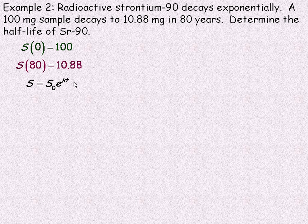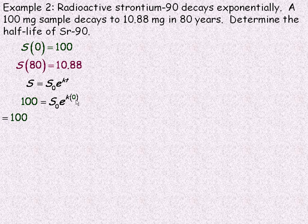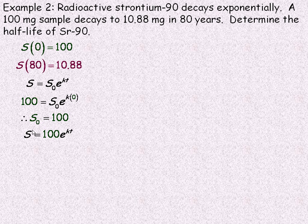We'll use s to represent the amount of strontium, with s(0) = 100 and s(80) = 10.88. Our formula is s(t) = s₀ · e^(kt). Substituting 100 for s and 0 for t: e^0 = 1, so s₀ = 100 — confirming that s₀ is the initial amount. The formula becomes s(t) = 100 · e^(kt), where k is the decay constant.